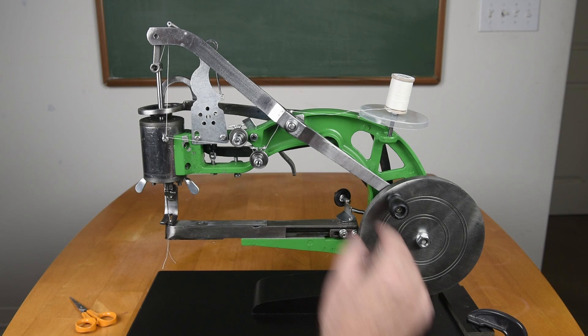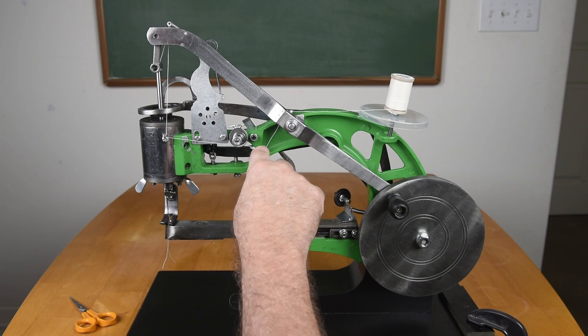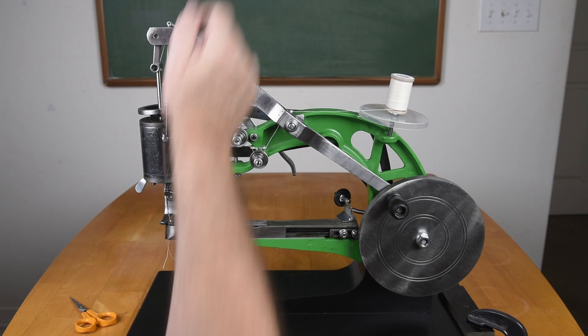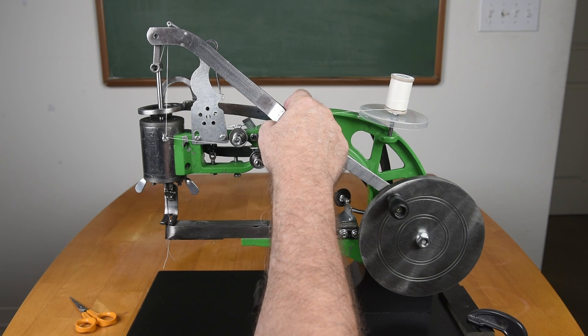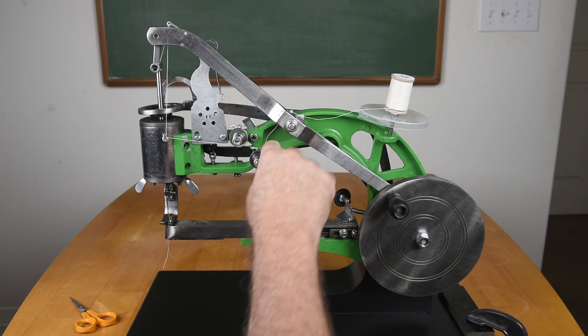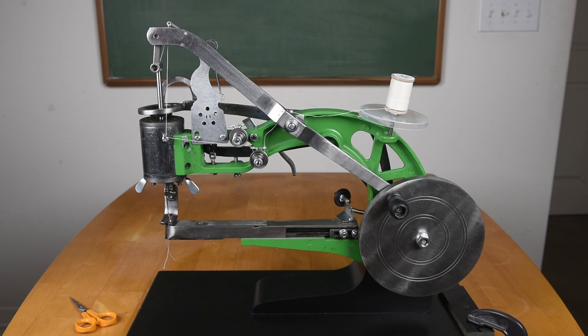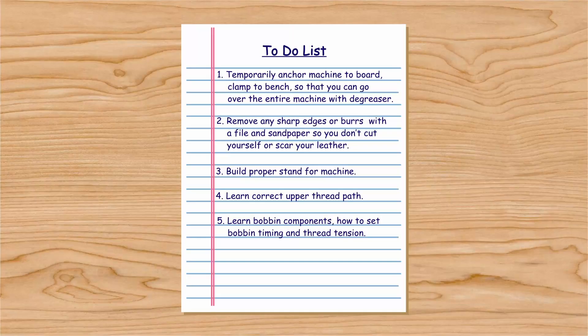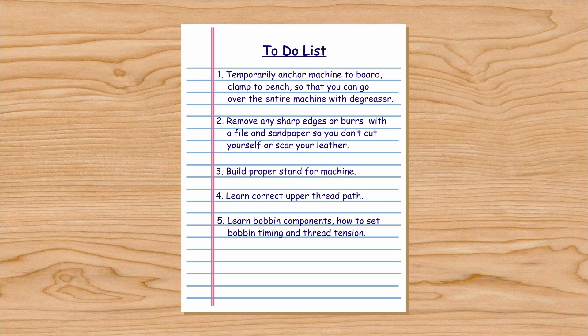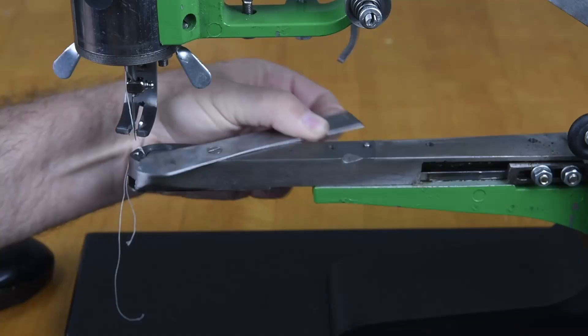Something to take a look at as you're threading this or when you first get the machine is all these areas that the thread comes in contact - here, here, up here at the top, down here, anywhere. Make sure that you've gone over these with some sandpaper if there's any burrs at all. This little wire cage, make sure that's smooth. The coil is smooth. Make sure that the thread is not catching on anything and causing any kind of drag that can cause a problem with your tension.